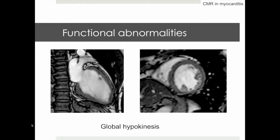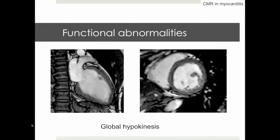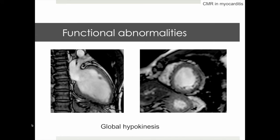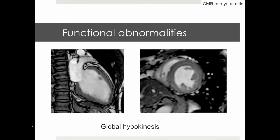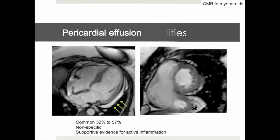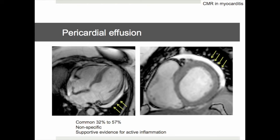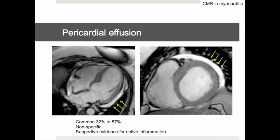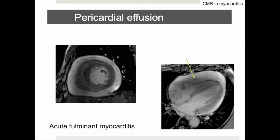Functional abnormalities in myocarditis are commonly subtle, and if present, they affect myocardium globally, without a definite regional preference which is more commonly encountered in coronary artery disease. Pericardial effusion is a common yet non-specific finding, which provides some supportive evidence for the presence of active inflammation. Pericardial effusion can be mild and localized or severe and globally enveloping the heart, with signs of hemodynamic compromise such as diastolic collapse of right ventricular free wall.